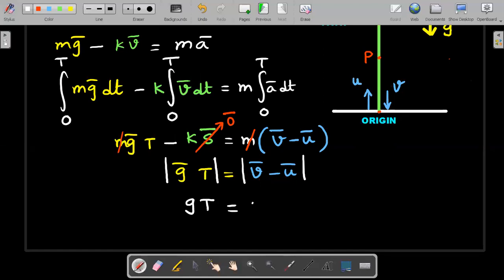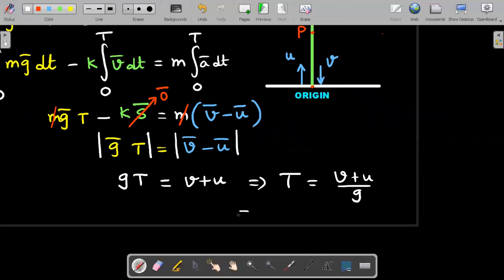So this would simply be v plus u in magnitude. I've removed the bar, v and u are simple magnitudes. This gives you the value of time period is simply v plus u divided by g. And hence value of T, v was given 16 meter per second, u was 20 meter per second, g was 10 meter per second squared, which immediately shows you the answer as 3.6 seconds.